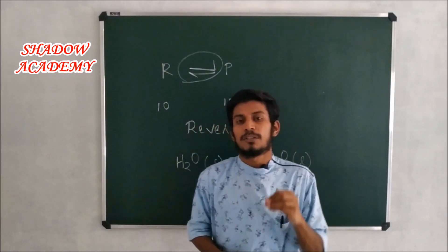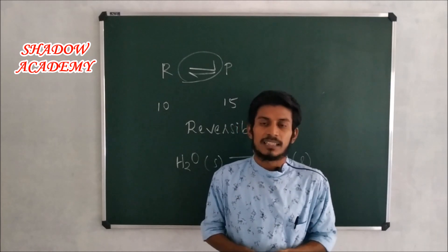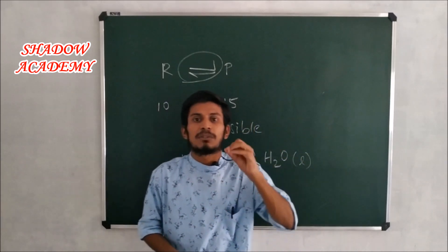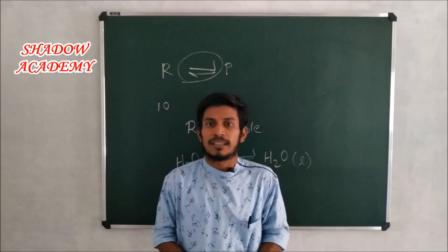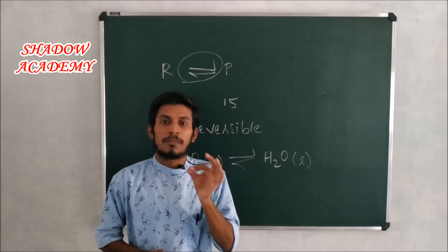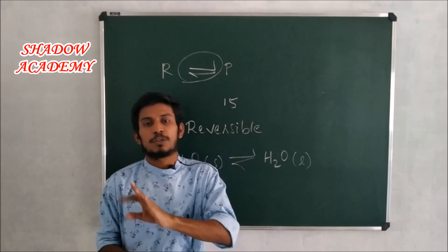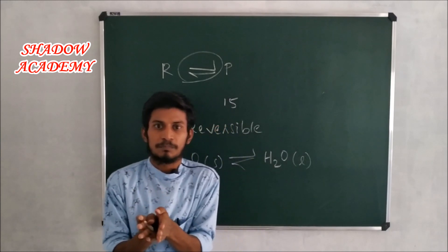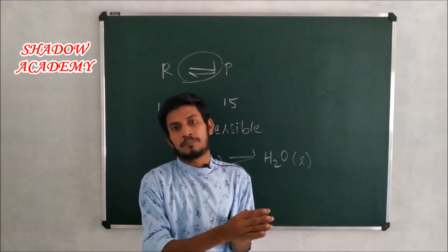We have an equilibrium where we can keep the same system at 273 Kelvin. We don't have to take the same amount — we can take the same amount, and this amount is included. The amount of ice is a corresponding amount. For example, if I take the total ice, I represent the whole system.